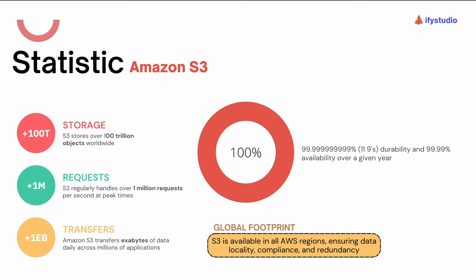Here are some fun stats about S3. Do you know S3 stores over 100 trillion objects worldwide? Yes, 100 trillion — that's a huge amount of data stored on the cloud. Secondly, S3 regularly handles over 1 million requests per second at peak times — that's a lot of requests. And the last figure is super crazy: Amazon S3 transfers exabytes of data daily across millions of applications.